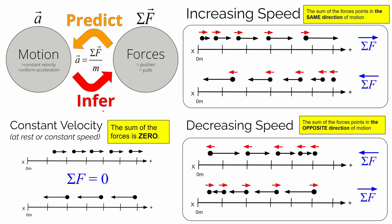Well, this car is moving at a constant speed — it's moving at a constant velocity to the right, so it's a constant positive velocity.